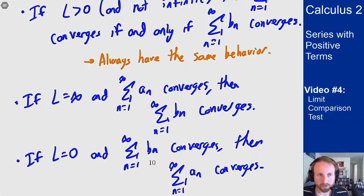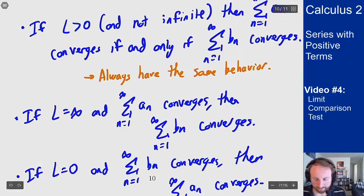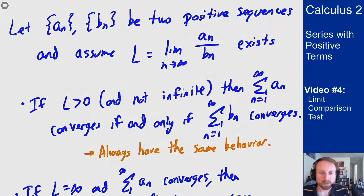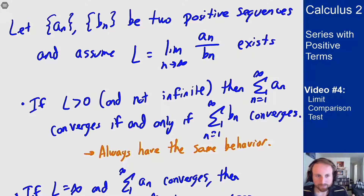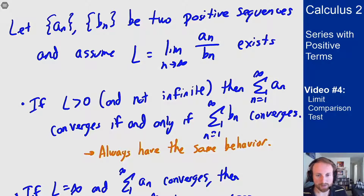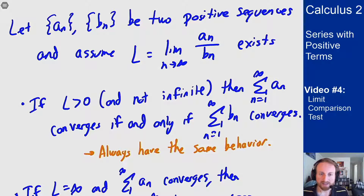This might seem complicated at first, but you're going to mostly be using the first case where L is some positive number. L is the limit of the ratios. If L is a finite number, that means a_n and b_n are essentially the same as each other up to multiplying by some constant. a_n could be like twice b_n. So if the series for a_n converges, then the series for b_n is just twice that value and also converges. If the limit is some number bigger than zero and not infinity, the series always behave the same way because they're just multiples of each other — that constant multiple doesn't affect convergence or divergence.